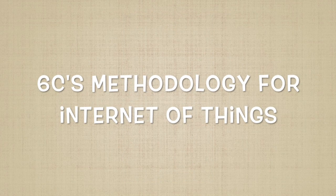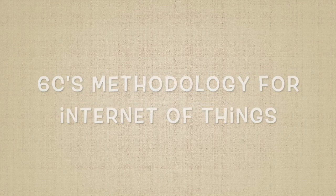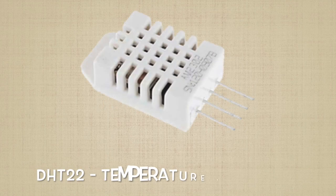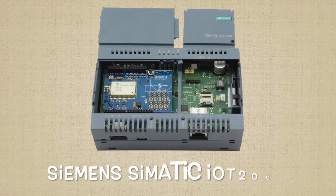To recap, there are a total of six C's in a typical Internet of Things application. First, you will need sensors and microcontrollers to generate the necessary data required.